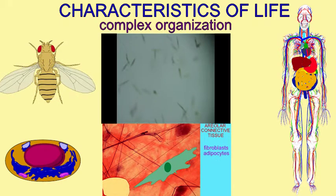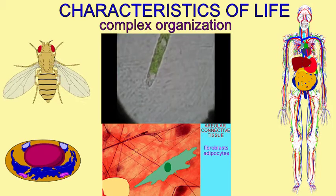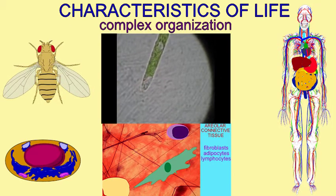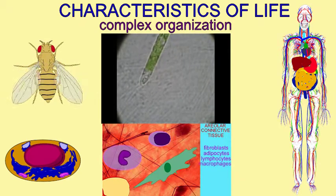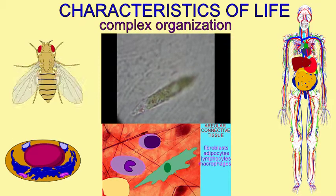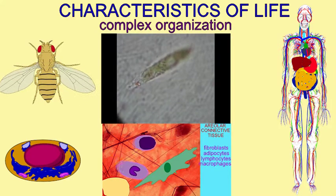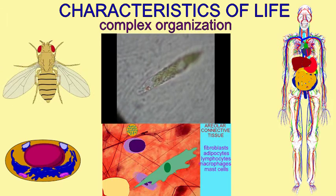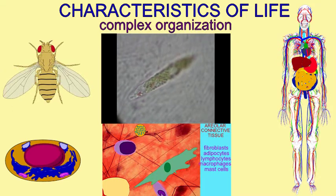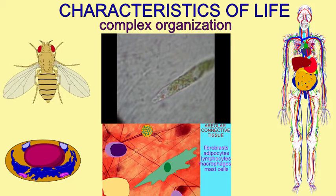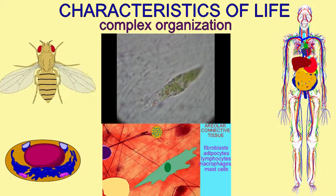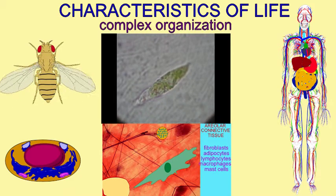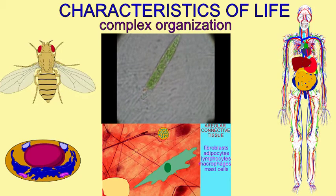Not only do they have chemicals which compose these cells, but these cells and their products can compose tissues. A variety of tissues performing a common function can form organs, and organs can then participate in systems. It's the sum of all of these systems that then compose the organism. So multicellular organisms have many levels of this complexity.